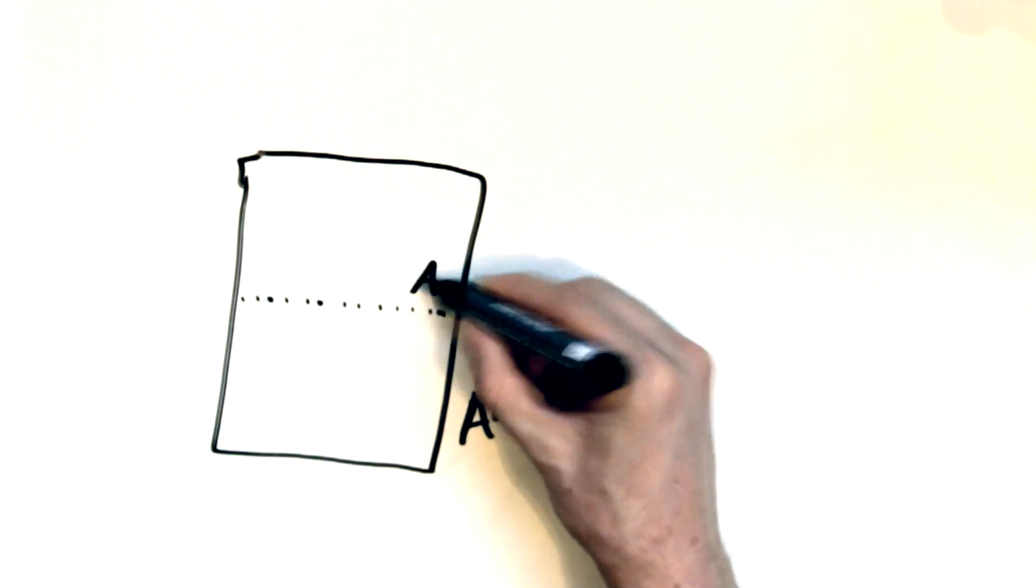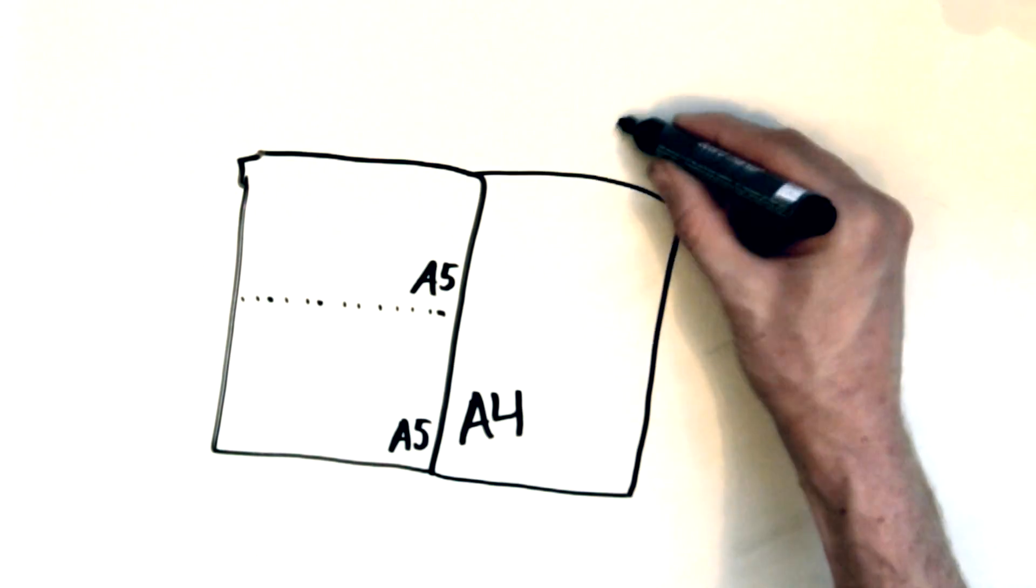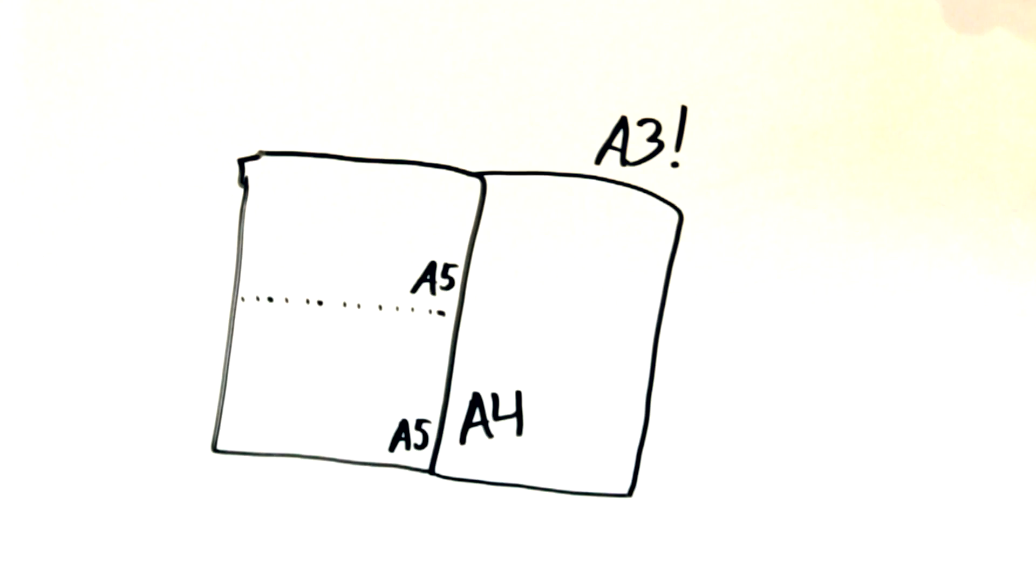The property A4 paper has is that it consists of exactly two A5 papers side by side. In turn, two A4 papers make up a larger A3 paper.